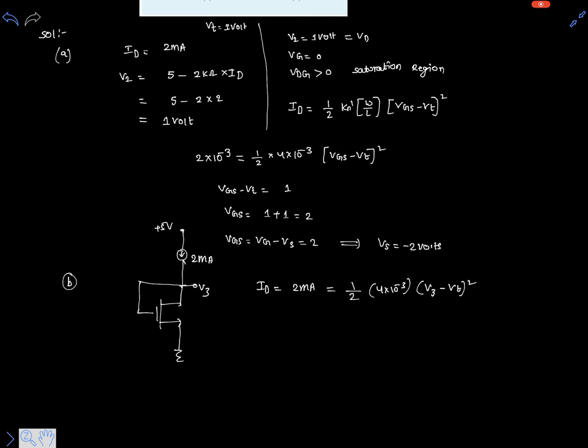Because drain and gate are connected to the same terminal, vg is vd now, so vgs is nothing but v3, because the source is connected to ground. So v3 minus vt equals 1, so v3 is 1 plus vt, which is 1 plus 1 equals 2 volts.